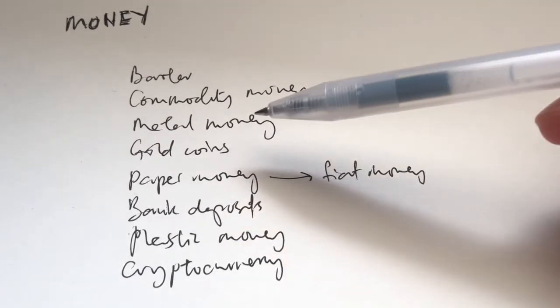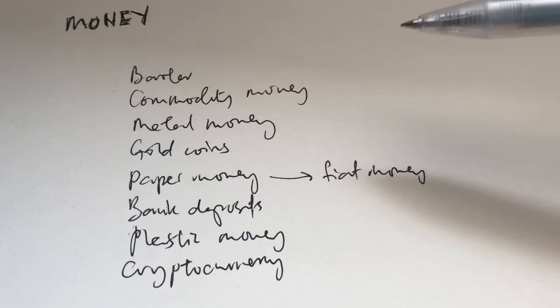However, the usage of gold coins, or gold dinar, ended in 1924 after the fall of the Ottoman Turkish Empire.